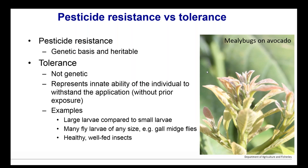Everyone sprays pesticides, and that's a normal part of managing a production nursery. In addition, healthy, well-fed insects — which are typically present in a production nursery because you're producing wonderfully lovely healthy plants — are a little more tolerant to pesticides than ones feeding on a host that isn't ideal, or under stressful environmental conditions. It's just like people: if you're stressed or have a nutrient deficiency, you're more likely to have a problem with disease.